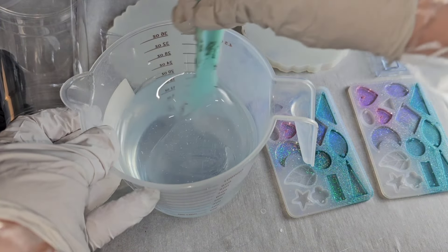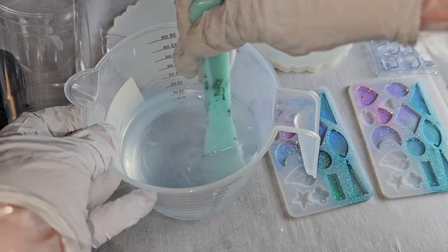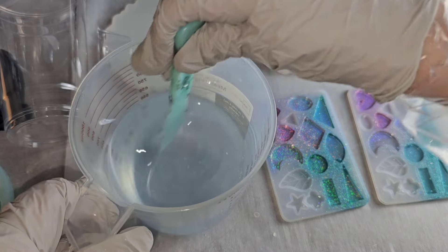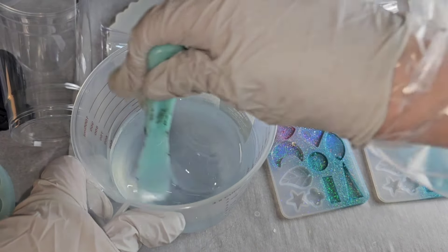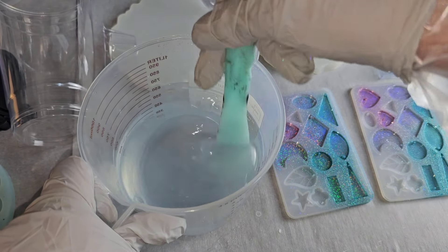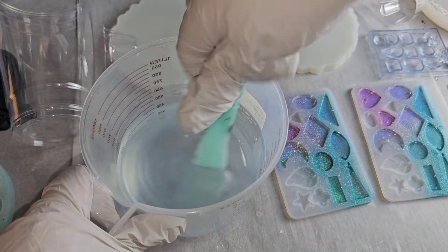Now I'm going in with my plastic spatula and I'm going to mix that up for three minutes. Mixing slowly, scraping the bottom of the cup, scraping the side of my cup, scraping off my stir stick, making sure that I'm not really whipping it up, introducing a bunch of air bubbles into my resin.